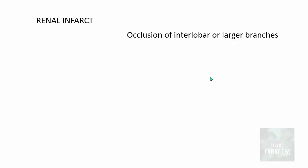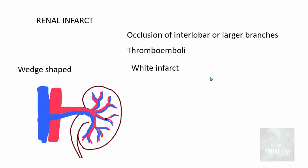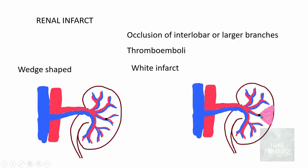In renal infarction, occlusion of interlobar or larger branches — most commonly by thromboembolism — results in white or pale wedge-shaped infarcts. As these vessels divide into smaller branches they fan out to supply a larger area, so an occlusion at a given point causes ischemia to the entire area supplied, producing a wedge-shaped infarction with the apex at the site of occlusion and the base at the periphery of the kidney.